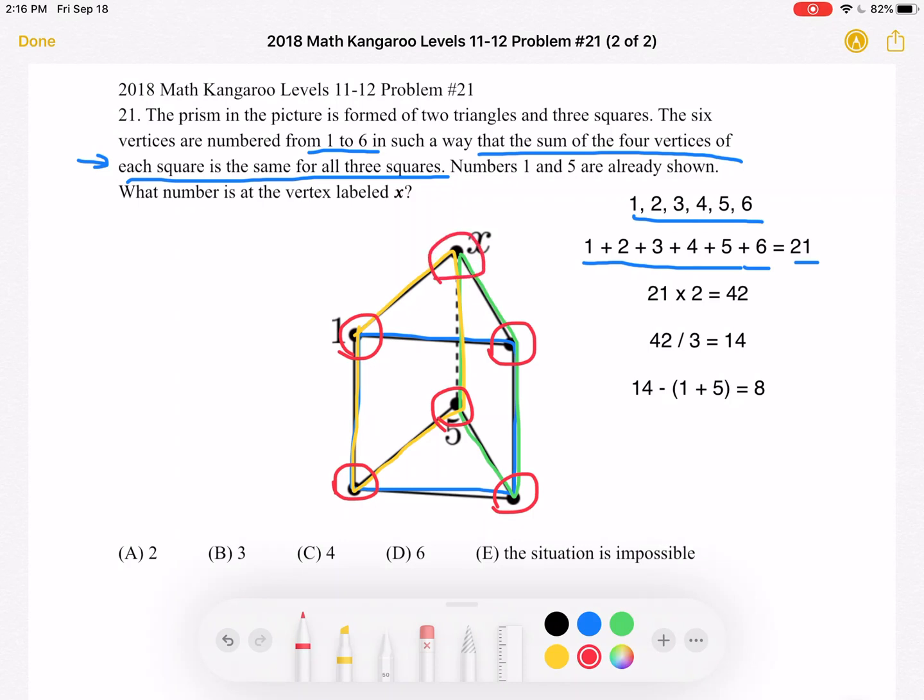We already found the sum of all the vertices is 21. So in order to find the sum on each square, we should take 21, multiply by 2, and then divide that by 3 because each square has the same sum. So 42 divided by 3 is equal to 14. Each square should have a sum of 14.